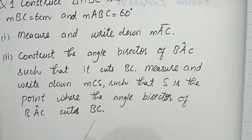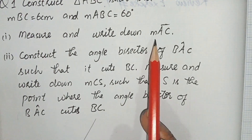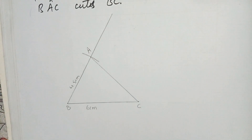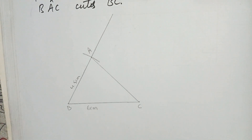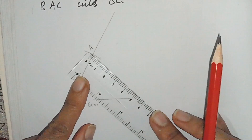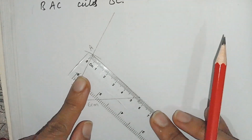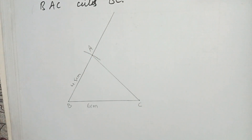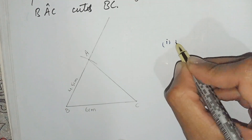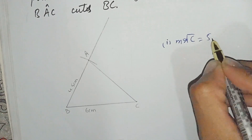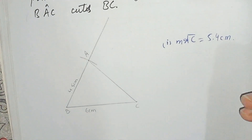Now, part number one: measure and write down the length of AC. We measure AC and it is equal to 5.4 centimeters. So the answer for part one is: AC is equal to 5.4 centimeters.